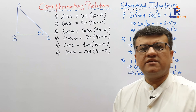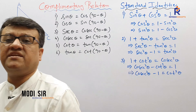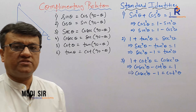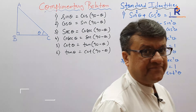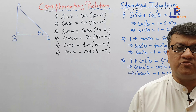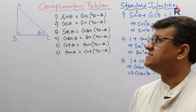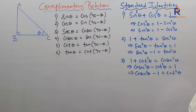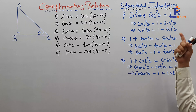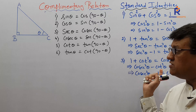Having studied the standard basic functions — sine, cos, tan, cosec, sec, cot — and having understood the reciprocal relations, let's move further with complementary relations. Here I have written the standard identities; we'll go through that also.